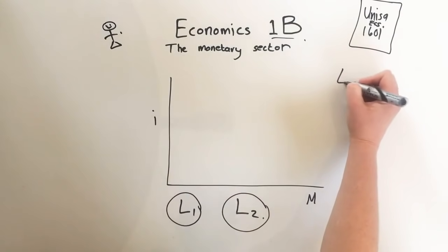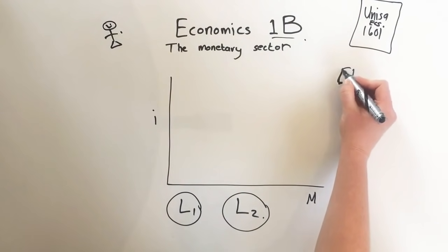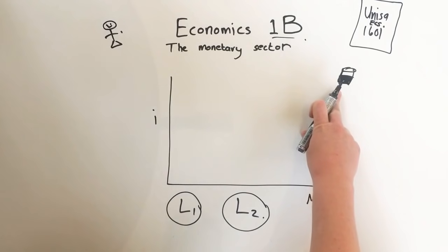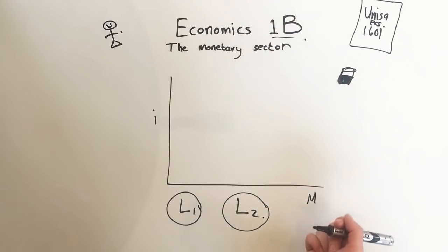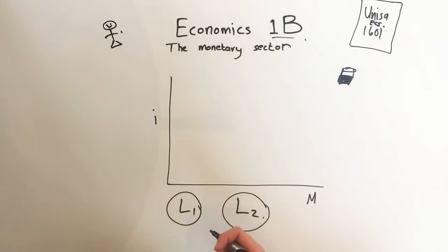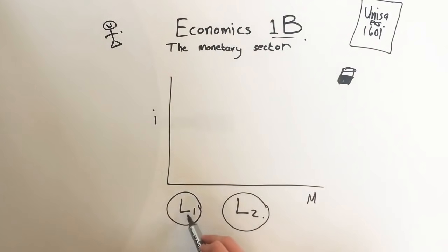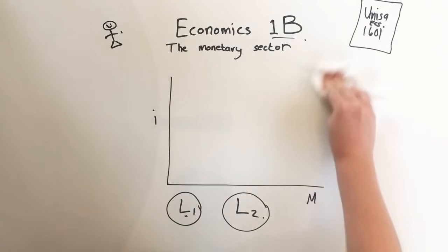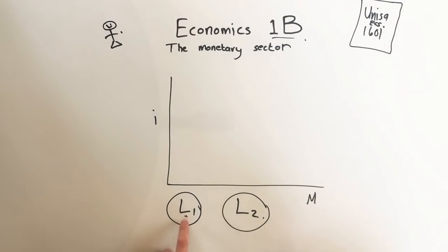The active one is L1 and the passive one is L2. The reason they use L, which stands for liquid, is that money is very liquid — you can use it in a transaction immediately. If you're hungry and have cash, you can go buy food. Whereas if you have an asset like a house, it takes three months to sell, which doesn't help your hunger at all. So money is very liquid, and that's why they picked the letter L.